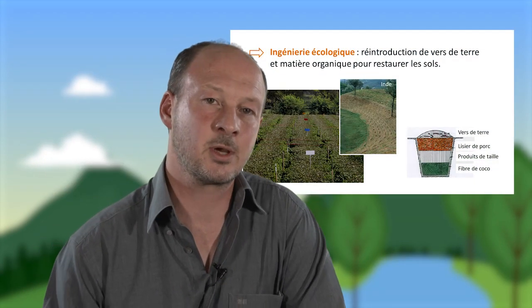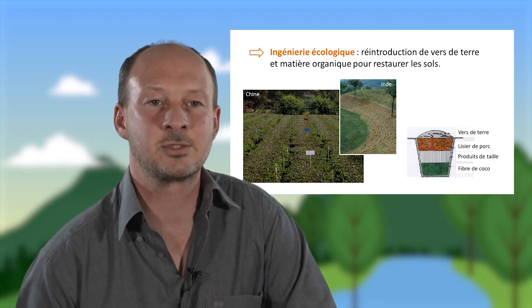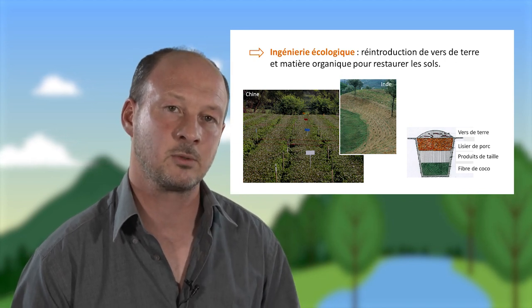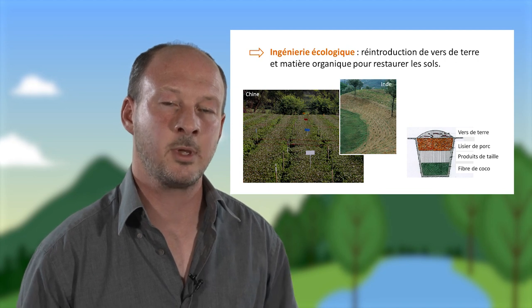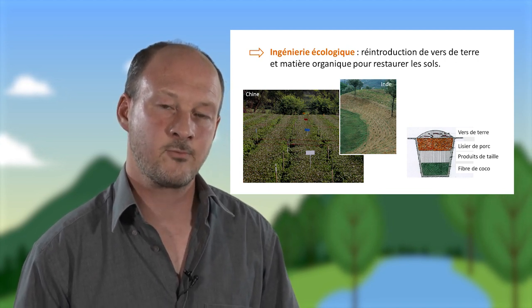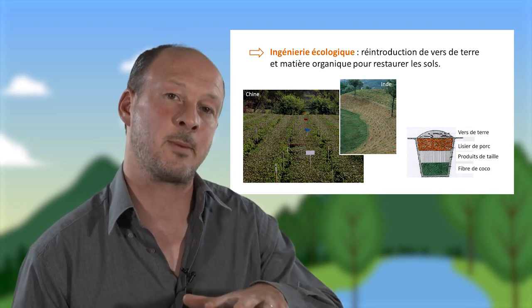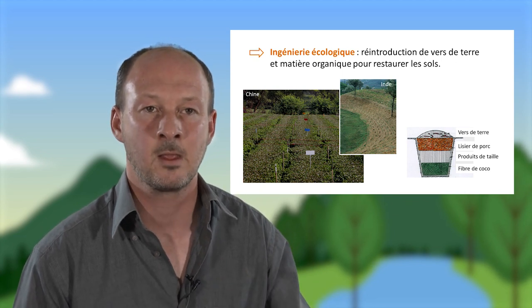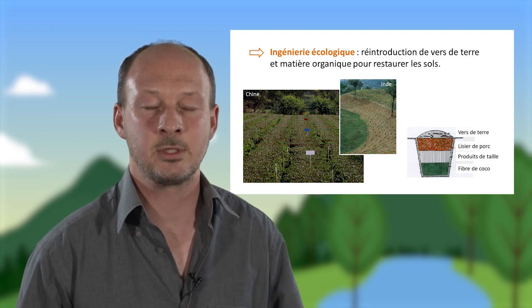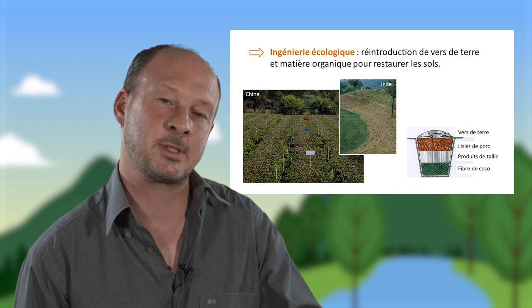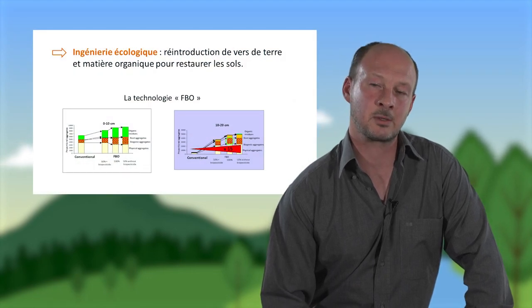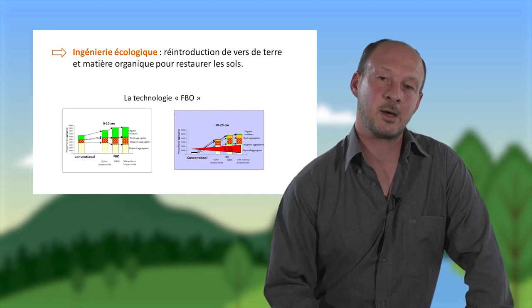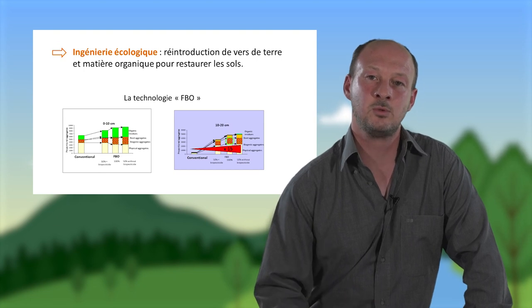La solution préconisée par l'ingénierie écologique, qui a fait l'objet d'un brevet appelé la fertilisation bio-organique (FBO), consiste à réintroduire des vers de terre et de la matière organique dans des micro-sites, des tranchées visibles sur la photo de la plantation de thé en Inde. À partir de ces fosses contenant différents types de matières organiques et des vers de terre, on obtient une diffusion et une propagation dans l'ensemble de la plantation des organismes du sol. Cette technologie a produit des résultats impressionnants, avec une multiplication par 15 de la quantité d'agrégats sur certains horizons du sol.